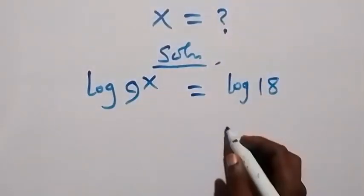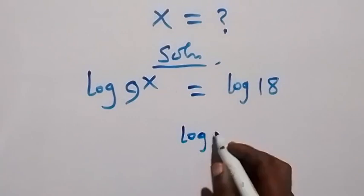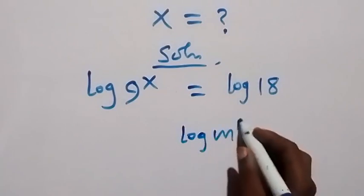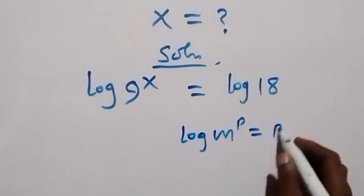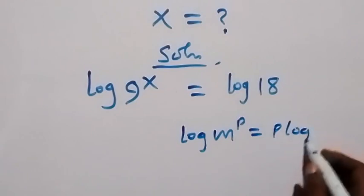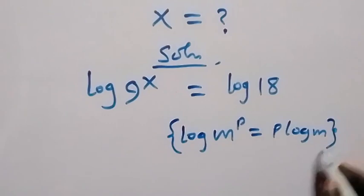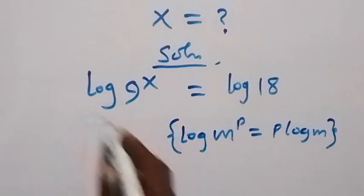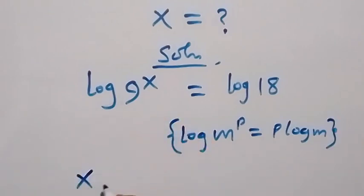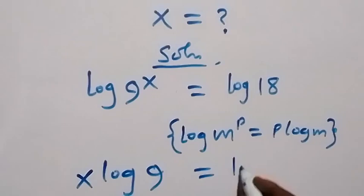From here, we have the power rule of logarithms: log n^p is the same thing as p log n. So when we apply this to what we have, we can take x here and this becomes x log 9 equals log 18.